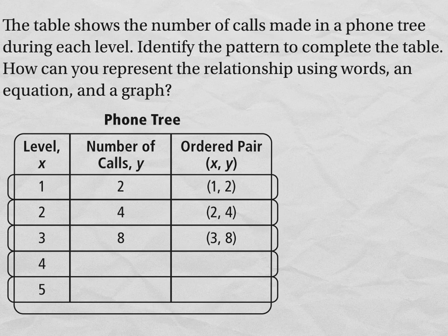The number of calls at level 1 is 2. So we have the ordered pair 1, 2. The number of calls at level 2 is 4. At level 3, it's 8.